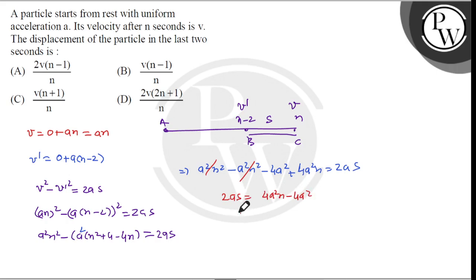S equals 2an minus 2a, which is 2a common, so 2a times (n minus 1).